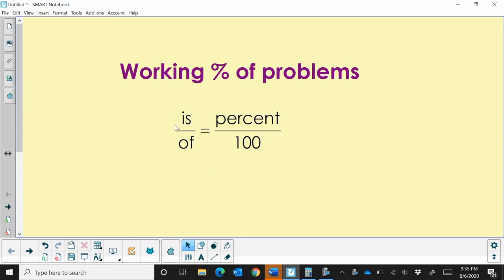So what is the formula? Is over of is equal to percent over 100. And if you set this up every time, it works.